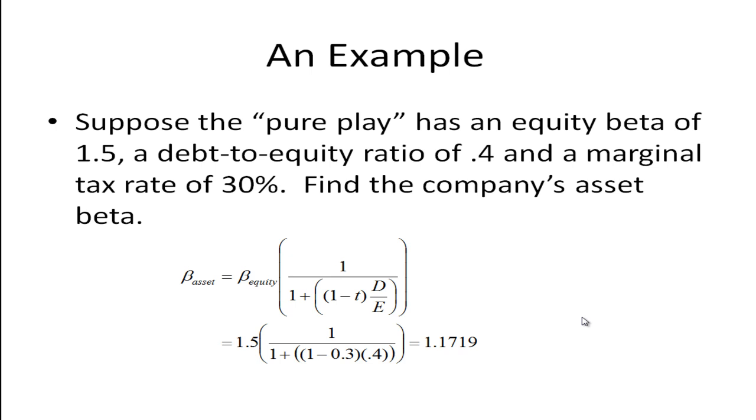Let's take a look at an example. Suppose the pure play we find has an equity beta of 1.5 and a debt to equity ratio of 0.4. And also assume that the marginal tax rate is 30%. Well, we can find the company's asset beta by simply substituting in these numbers into our equation, 1.5 for beta, 1 minus 0.3, 0.3 being the tax rate, and then 0.4 for the debt equity ratio, and we get an asset beta of 1.1719.